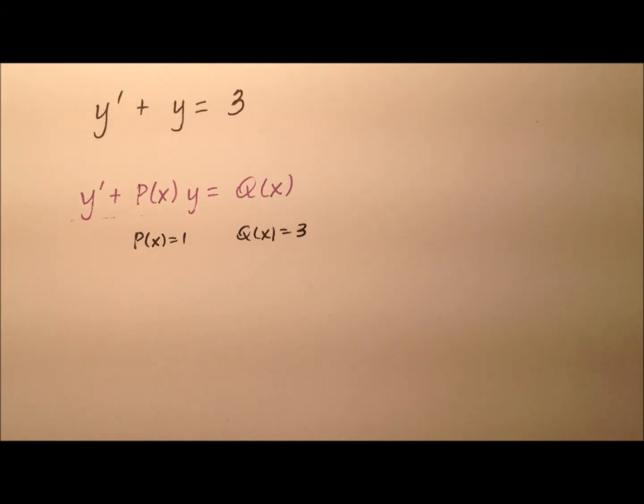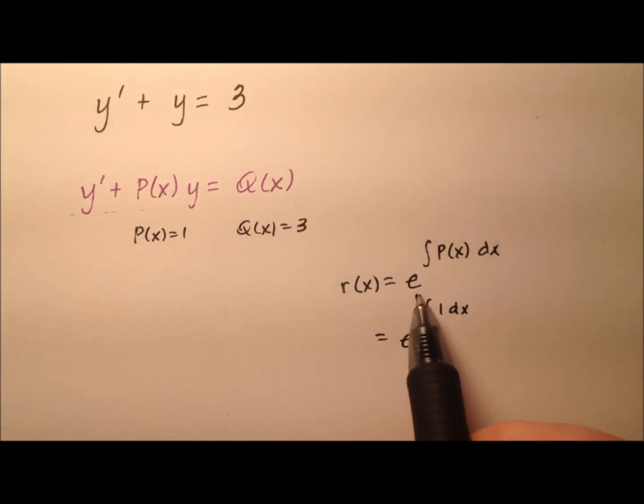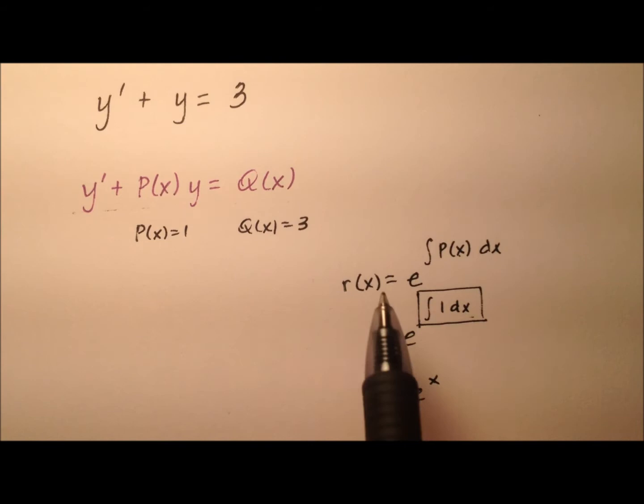The first thing we're going to look for is the integrating factor. We'll call this r(x) and it's going to be e to the power of the integral of P(x) with respect to x. If our P(x) is 1, this will just be the integral of 1 with respect to x, which is just x. So our integrating factor r(x) is going to be e to the x.